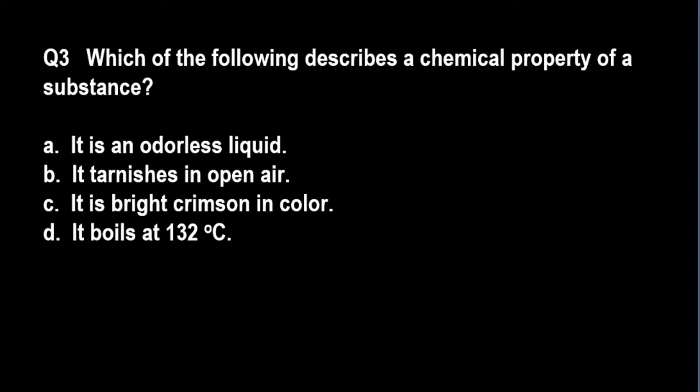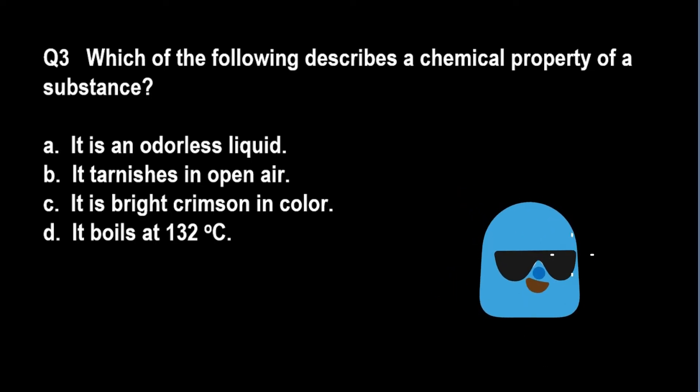Question number three: which of the following describes a chemical property of a substance? A: it is an odorless liquid, B: it tarnishes in open air, C: it is bright crimson in color, D: it boils at 132 degrees Celsius.